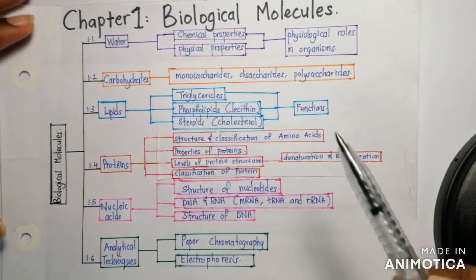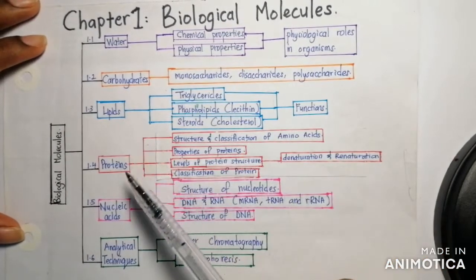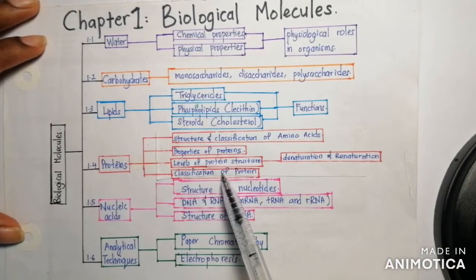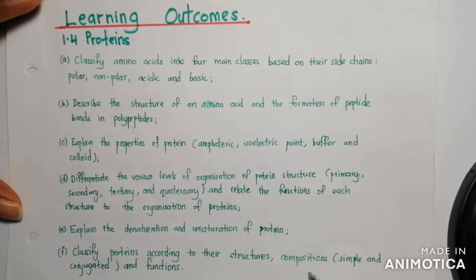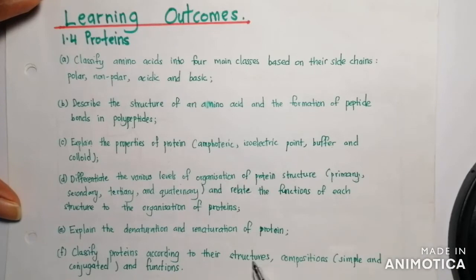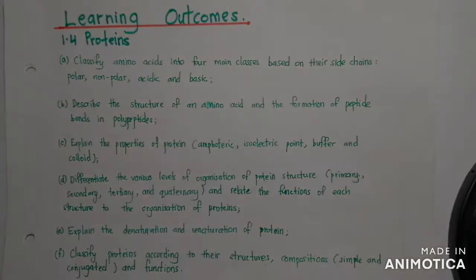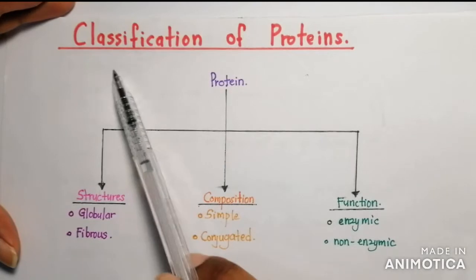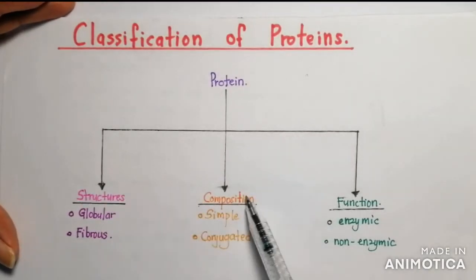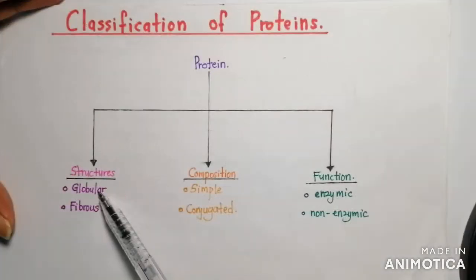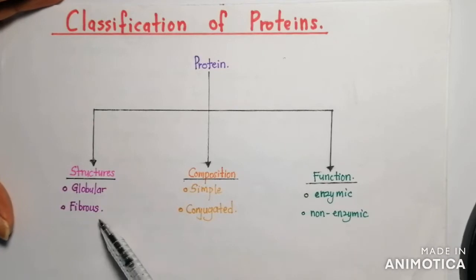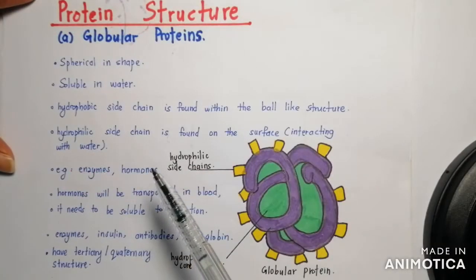Hi friends, today we'll be studying chapter 1, Biological Molecules, subtopic 1.4 Proteins: Classification of Protein. The learning outcome for today's video is to classify proteins according to their structures, composition — simple and conjugated — and functions. Today's video will focus on classifying proteins according to their structures. Proteins can be classified by structure, composition, and function. By structure, they can be classified into globular and fibrous.